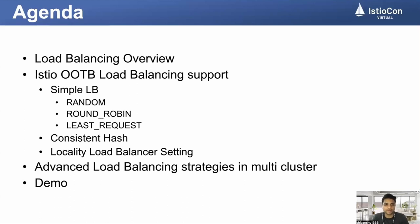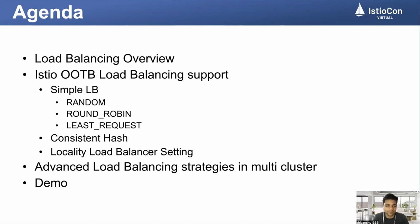The agenda includes understanding what load balancing is, how out-of-the-box load balancing configurations of Istio can be used, and what are the different configurations. For example, when we configure simple LB, what does random, round robin, and least request mean and how to configure them, what is consistent hashing and how to configure that in Istio, and locality load balancing settings like what are the failure settings and how to achieve locality load balancing in Istio.